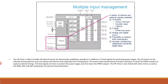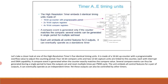Let's take a closer look at one of the five identical timing units — timer A through E. Each is made of a 16-bit up counter with a programmable overflow value to adjust the counting period. Four 16-bit compare units and two 12-bit compare units are linked to this counter, each with interrupt and DMA capability. A compare event is generated when the counter exactly matches the compare value. Several compare events can thus be generated during a single period to set and reset the output multiple times per PWM cycle. The unit can eventually operate as an independent timer, yet options can be controlled by other timers.